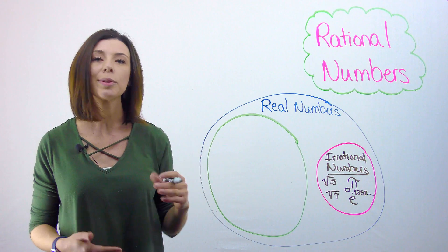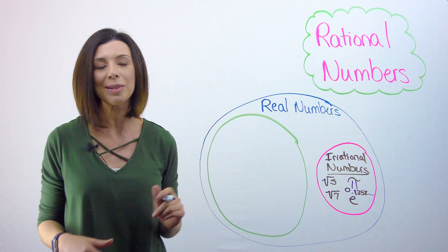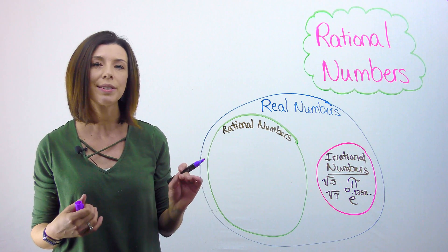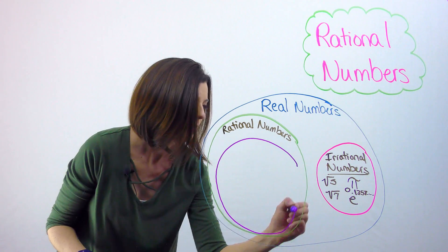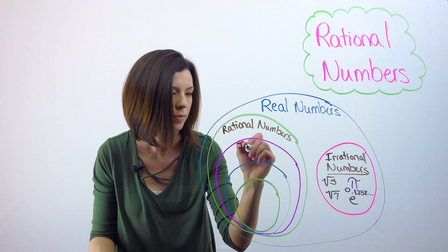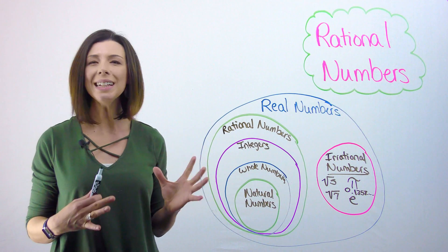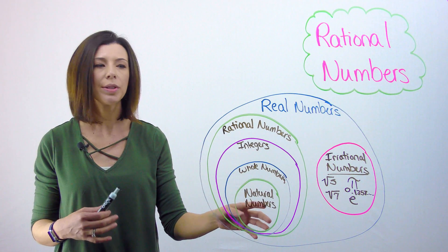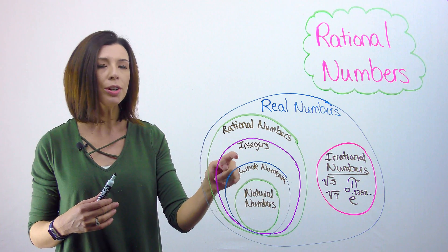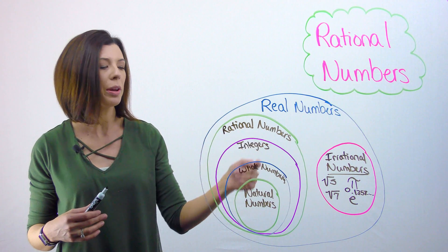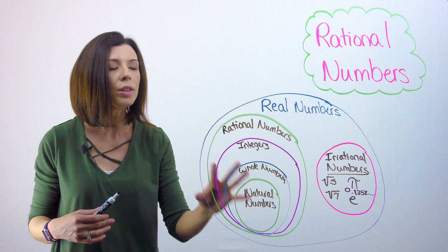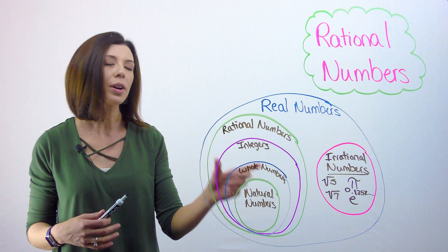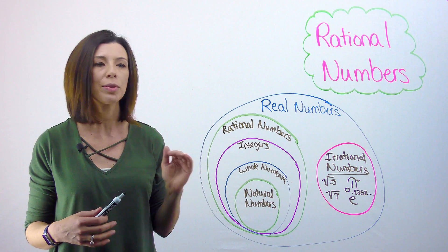On the other side are rational numbers. Inside rational numbers, there are three more categories: integers, whole numbers, and natural numbers. What this shows us is that integers are rational numbers, whole numbers are rational numbers, and natural numbers are rational numbers. The tricky part is understanding what distinguishes each of these more specific areas.